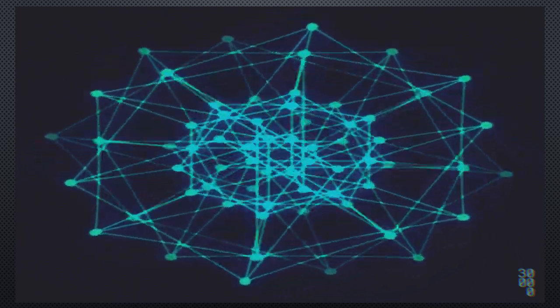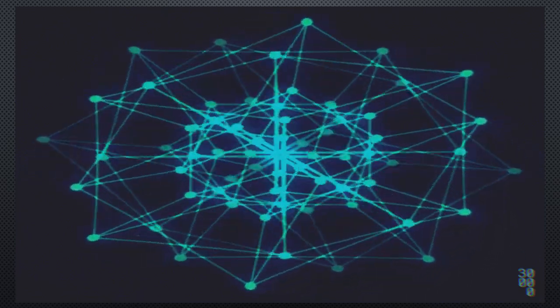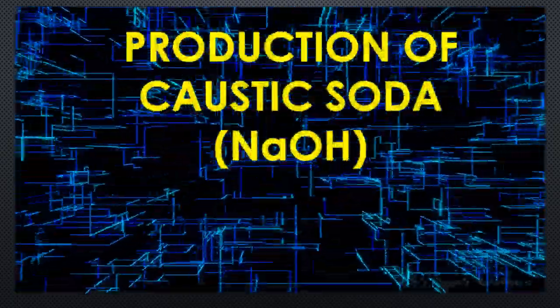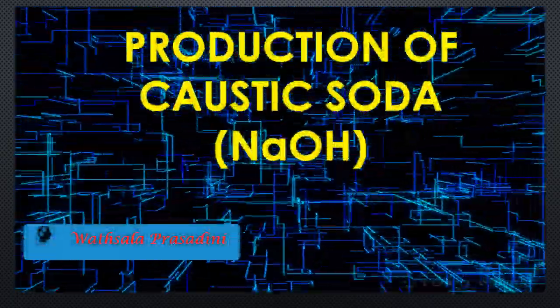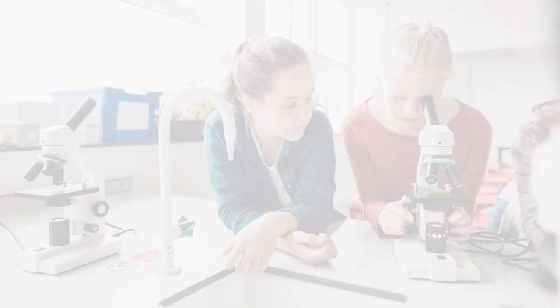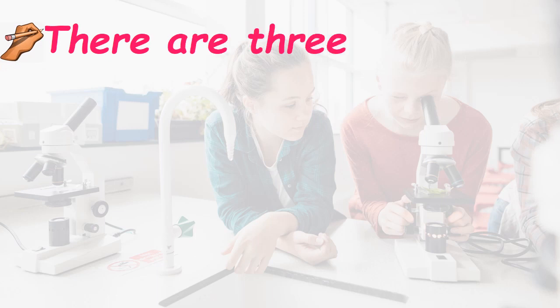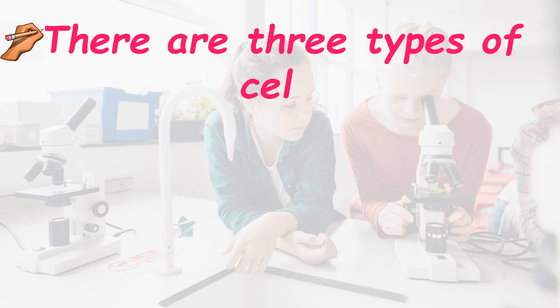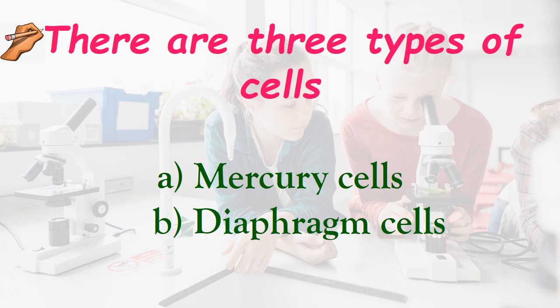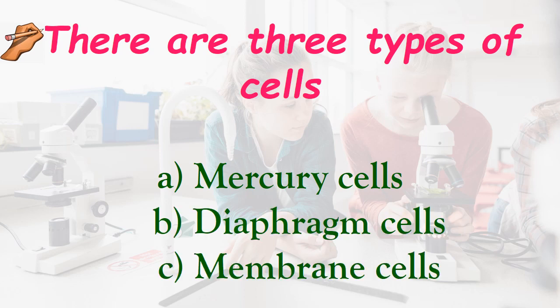Welcome to our YouTube channel Chemtaksalava. Today we are going to do a new part of industrial chemistry, that is production of caustic soda. Basically there are three types of cells that can be used to produce sodium hydroxide or caustic soda: mercury cell, diaphragm cell, and membrane cell.